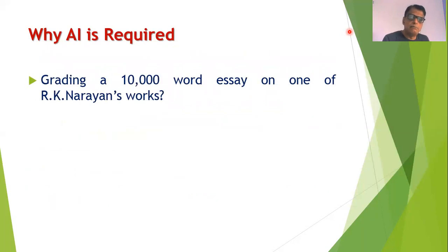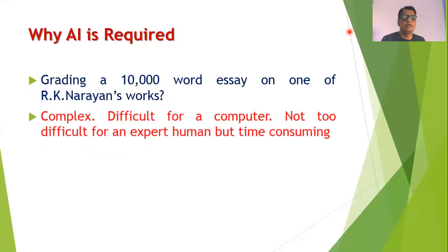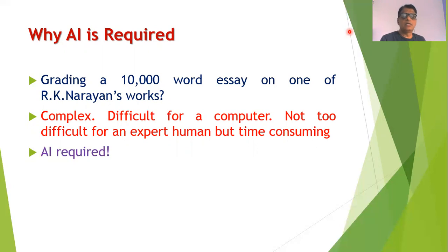Now consider another example. Suppose a word essay containing more than 10,000 words is given to you, or consider a PhD thesis given for evaluation. This is a very complex task — it is very difficult for a computer to perform. But it is not that difficult for a human expert who can easily do such tasks, though some time will be required. This is a task where artificial intelligence is required.